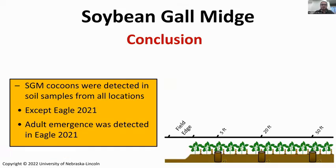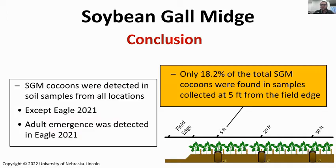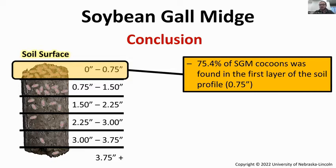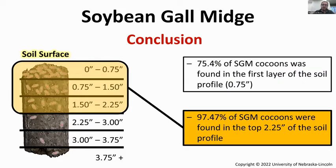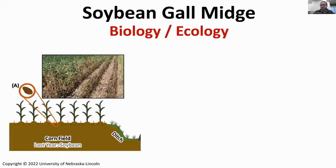Comparing 2019 and 2021, we see the same pattern of distribution. In the first layer, we got the higher number of cocoons — more than 87% of the cocoons found in the samples were in those layers. In conclusion, soybean gall midge cocoons were detected in all samples collected from the studied fields. When checking cocoons per distance, only 18% were found within 5 feet of the field edge. About 75% of soybean gall midge cocoons were found in the first inch of soil, and more than 97% were found in the first 3 layers of soil.